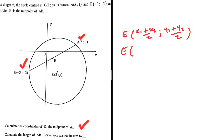So the coordinates of E: X of A is 5 and X of B is minus 3. We divide that by 2. And then Y of A is 1, Y of B is minus 3. We are still dividing by 2. So 5 minus 3 is 2, and 2 divided by 2 is 1. Then 1 minus 3 is minus 2, and minus 2 divided by 2 is minus 1.